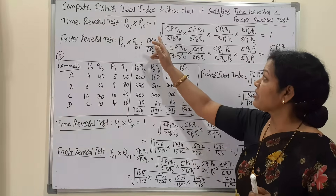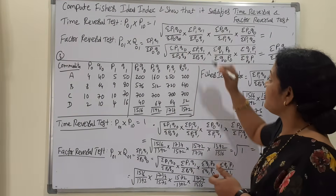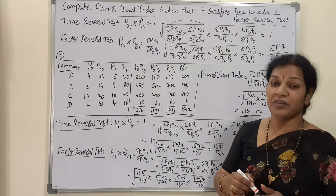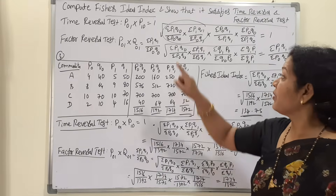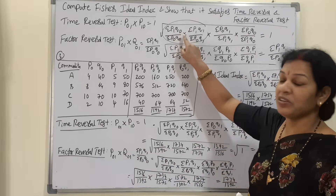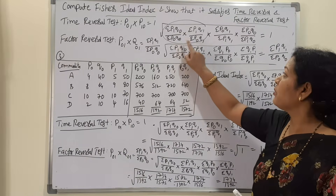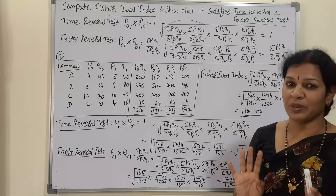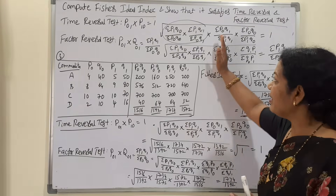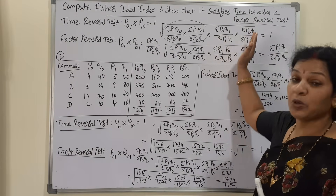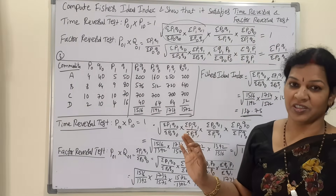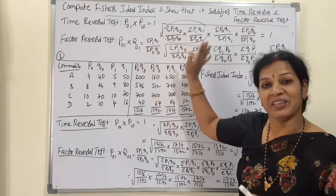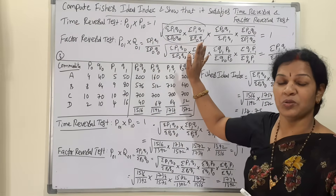If we extend the formula, Fischer's ideal index number is: √[(ΣP1Q0 / ΣP0Q0) × (ΣP1Q1 / ΣP0Q1)]. We have done this already in the previous problem. For the other side, P10, we are just taking the reverse of this formula.